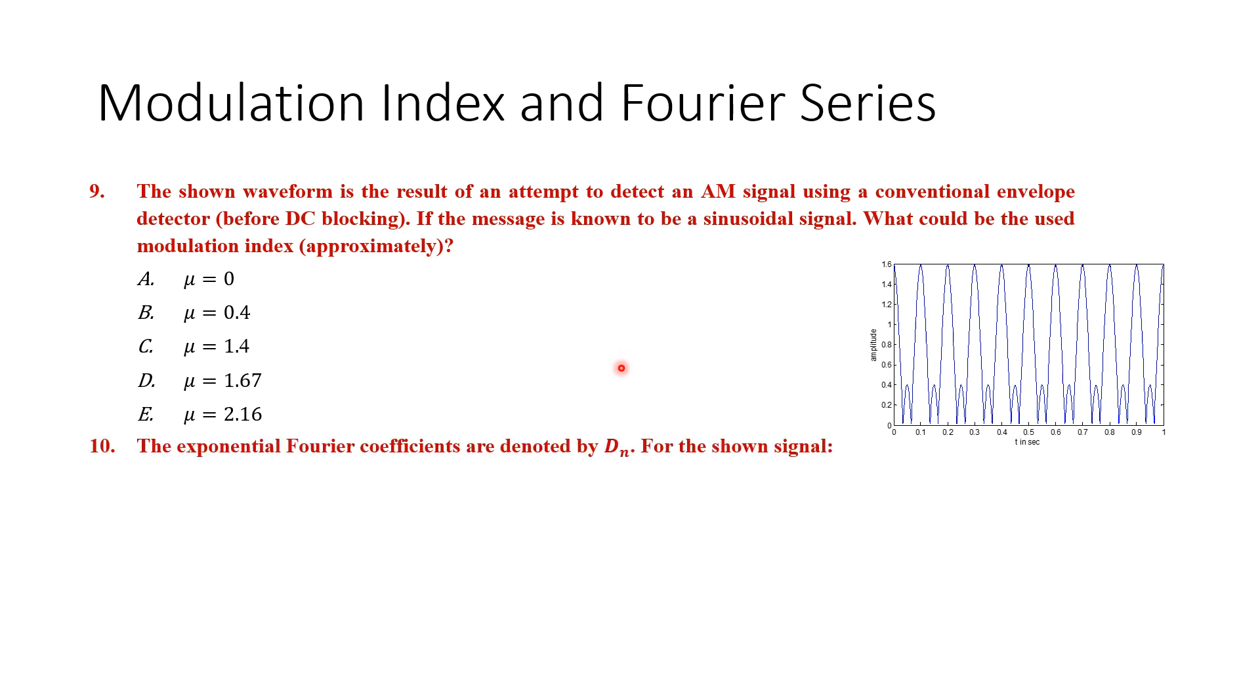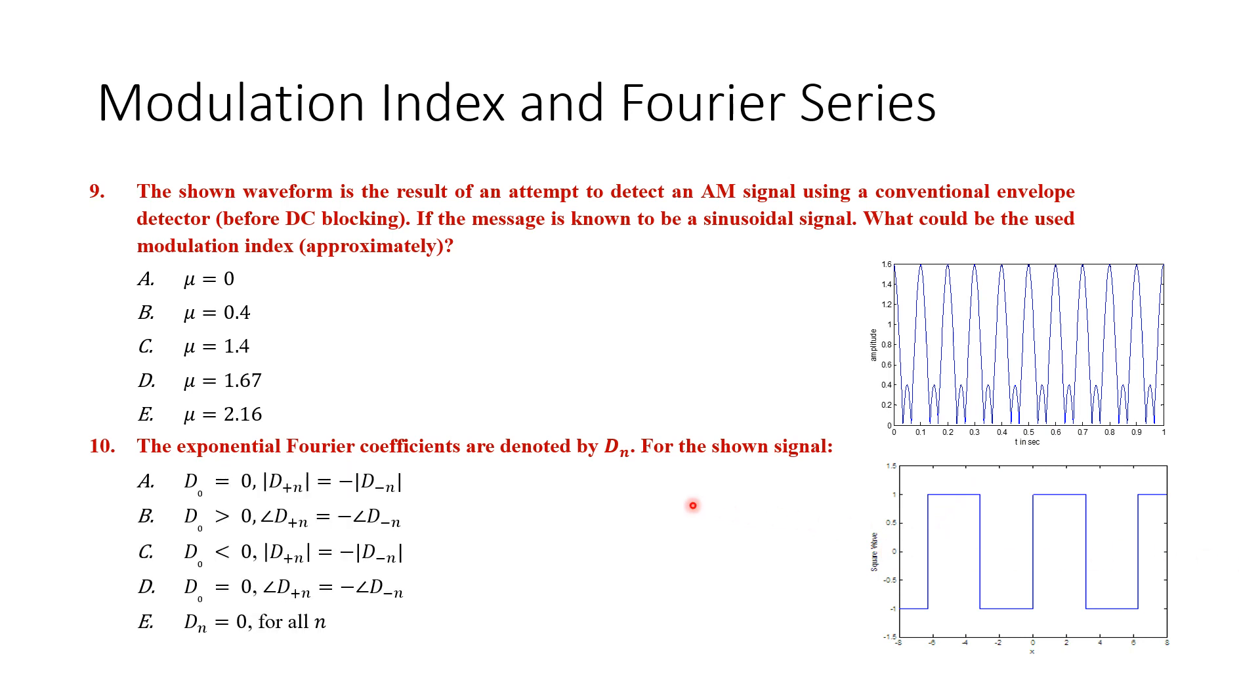Question number 10: the exponential Fourier series coefficients are denoted by dₙ. We're talking about the complex exponential series for the shown diagram, the following signal. Here is zero, there is the x-axis. Which of the following is true about the coefficient? We have A, B, C, D, or E. Again, you can pause the video, take two or three minutes and mark your answer.